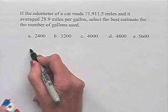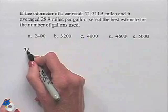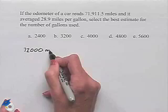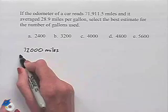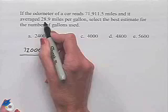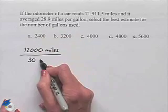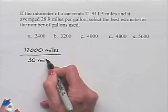What we want is to estimate the number of miles, and here I'm going to round up to 72,000. We're going to divide that by the number of miles per gallon, and we're going to estimate here instead of 28.9, I'm going to rewrite that as 30 miles per gallon.